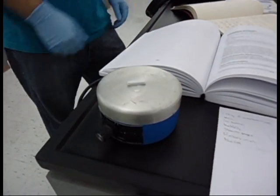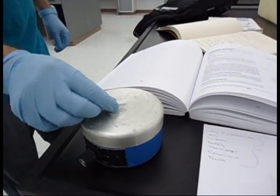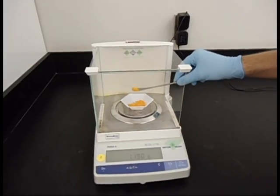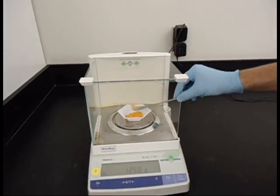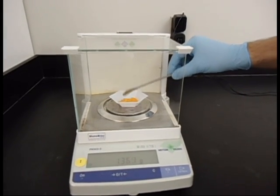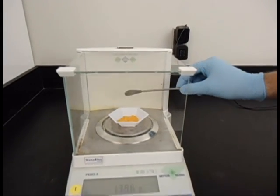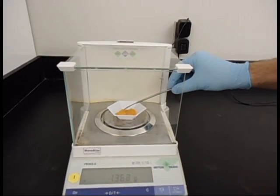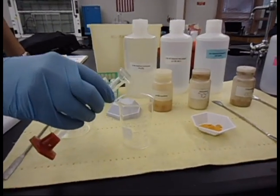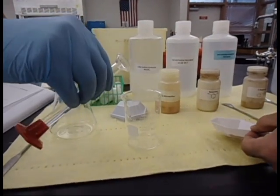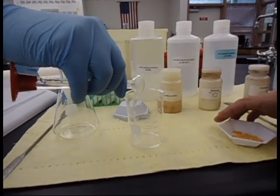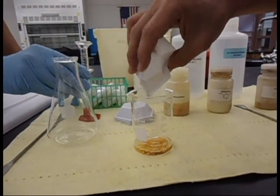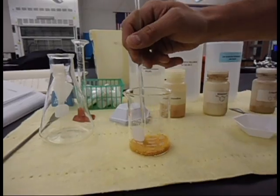In this step, we're measuring out 1.381 grams of p-nitroanilin. Now we have eight milliliters of three molar hydrochloric acid, and we're going to dissolve the p-nitroanilin that we measured out earlier in the hydrochloric acid.